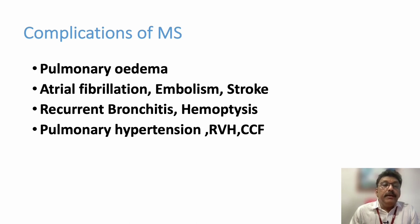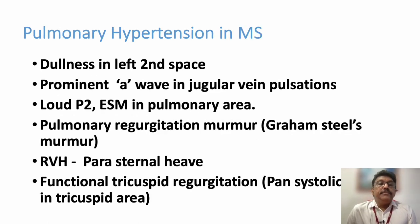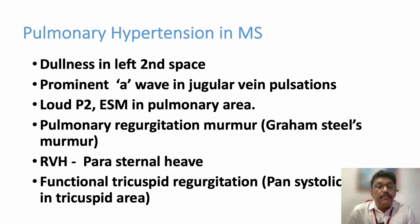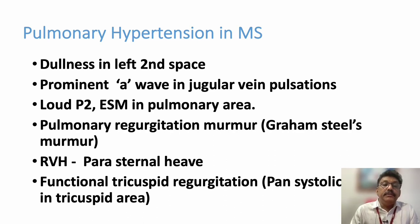Recurrent bronchitis is common because the left atrium compresses the left main bronchus. Hemoptysis (pulmonary apoplexy) and pulmonary hypertension were discussed earlier. Right ventricular hypertrophy and congestive cardiac failure are chronic complications of mitral stenosis. Once pulmonary hypertension develops, findings include dull second space percussion, prominent 'a' waves in JVP, loud P2, ejection systolic murmur in the pulmonary area, pulmonary regurgitation murmur (Graham Steell's murmur), RV parasternal heave, and functional tricuspid regurgitation producing a pansystolic murmur.